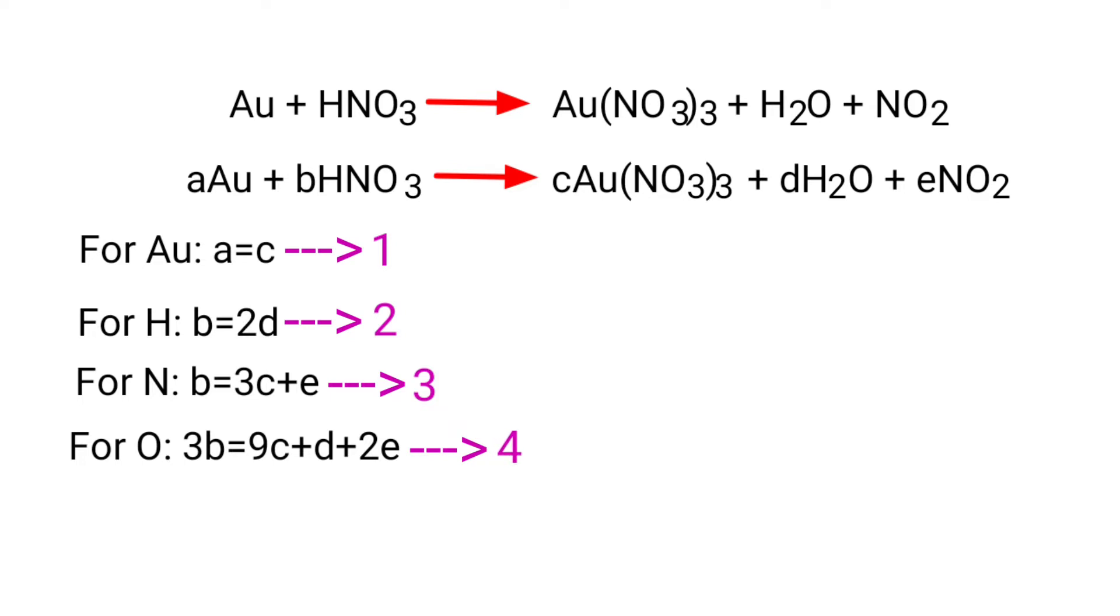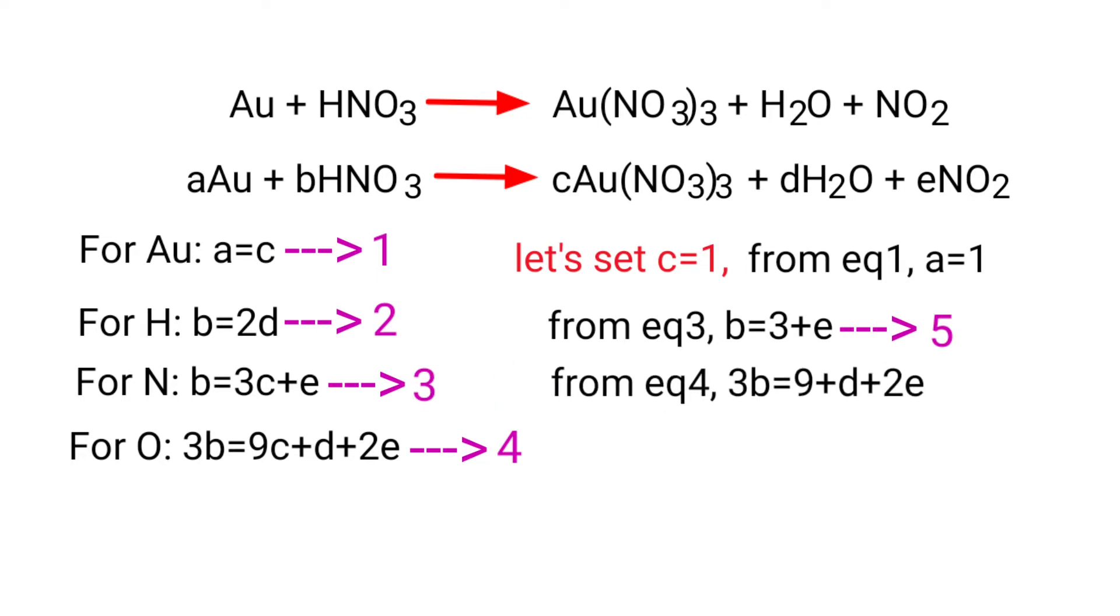Now you can solve the four simultaneous equations. It looks almost impossible but we know that the coefficients must be integers. Let's set c equals 1, then from equation 1, a equals 1. From equation 3, b equals 3 plus e. From equation 4, 3b equals 9 plus d plus 2e.